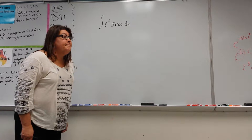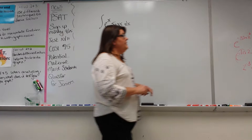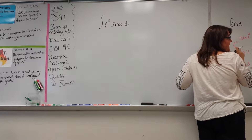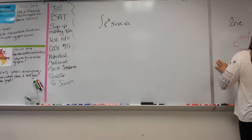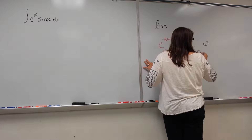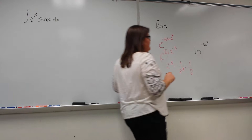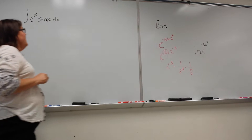Student asks: does the exponent-moving rule work with e, too, or just ln? Like, if instead of a negative 3 you have e as the exponent — could you do the same thing? No, because you can't take that exponent and bring it up as an x. It would actually need to be ln of x with e to the whatever, or whatever.